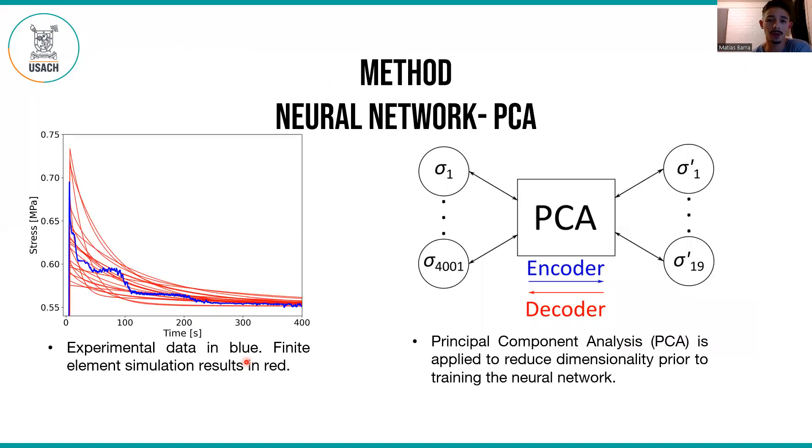The experimental data to be adjusted are those in blue. To train the neural network, 5,000 simulations of the relaxation test were performed using finite element method, varying only the viscous parameters of the model. The red curves correspond to some of these simulations.